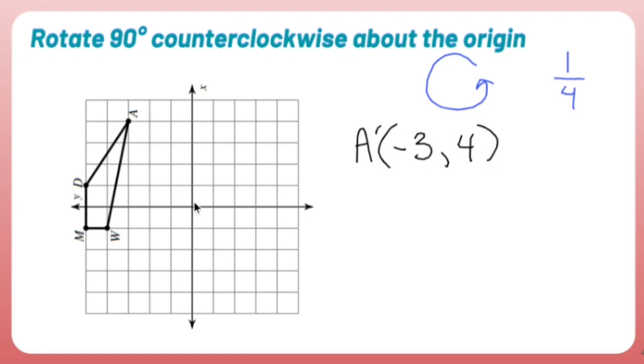In order to get to D, I go from my origin left 1, 2, 3, 4, 5, up 1. So D prime was left 5, negative 5, up 1, positive 1.